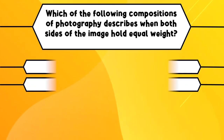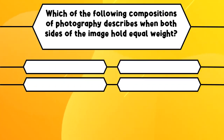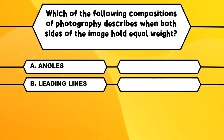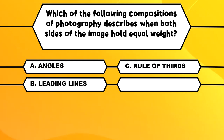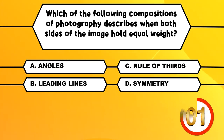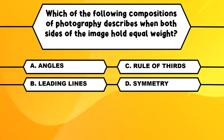Number 2. Which of the following compositions of photography describes when both sides of the image hold equal weight? A. Angles. B. Leading lines. C. Rule of thirds. D. Symmetry. The correct answer is D, Symmetry.